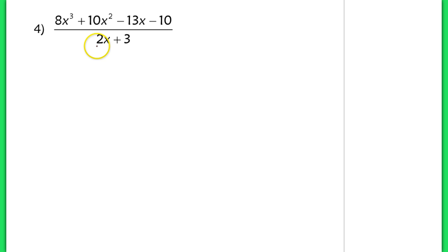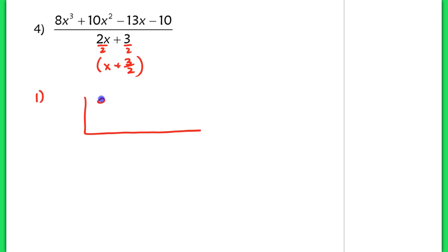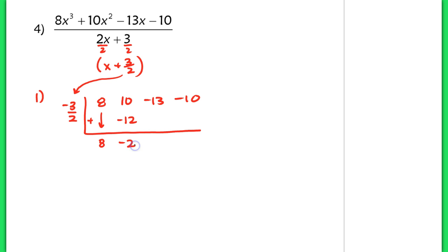We can't use a divisor with a lead coefficient of 2, so we're going to change it so the lead coefficient is 1 by dividing by 2, which means I also divide that term by 2 — ending up with x plus 3 halves as the divisor. When I set up my synthetic division, I use the same coefficients 8, 10, negative 13, and negative 10, then place the opposite of that term on the outside: negative 3 halves. I bring down that 8, multiply negative 3 halves times 8 and get negative 12. Adding the vertical terms inside gives me negative 2. Negative 2 times negative 3 halves gives positive 3. Adding negative 13 and 3 gives negative 10. Negative 10 times negative 3 halves gives positive 15. Adding negative 10 and 15 gives a positive 5.